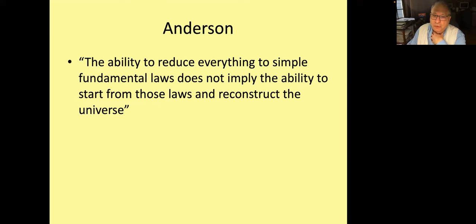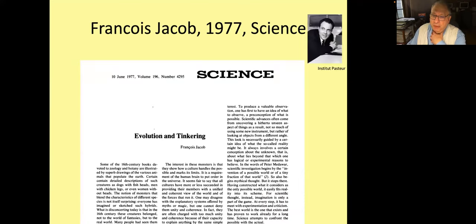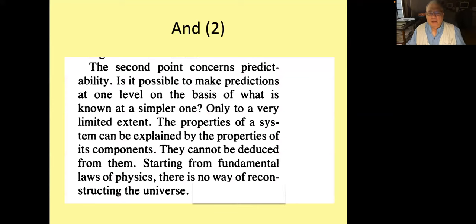A few years later and independently, another Nobel laureate, François Jacob, a biologist, published a paper in Science called 'Evolution and Tinkering.' It's a beautiful paper. In this, he says we must analyze complex objects at all levels. But secondly, it is a point concerning predictability. Can we make predictions at one level of what we know going on at lower levels? He says only to a limited extent. The properties of the system can be explained by the properties of its components, but they can't be deduced from them. Starting from the fundamental laws of physics, there's no way of reconstructing the universe.